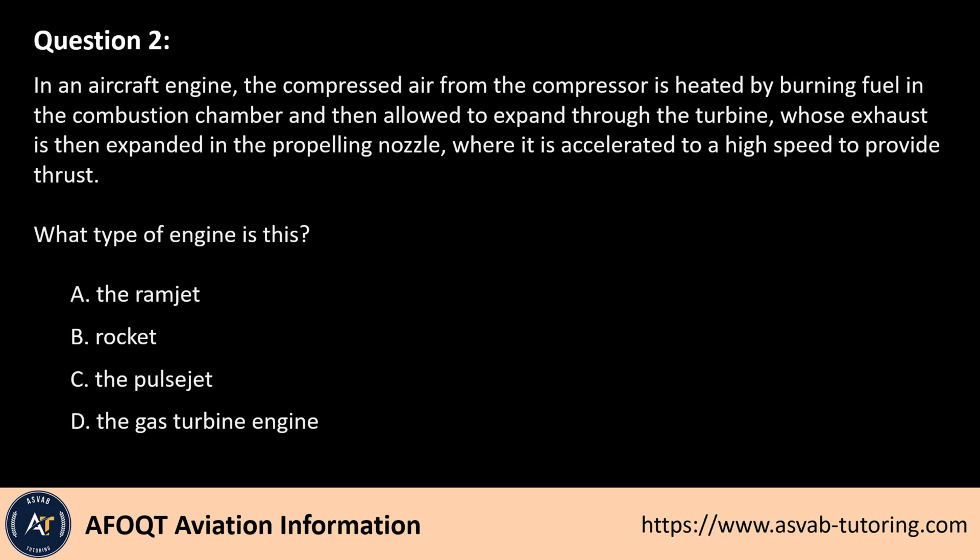Question 2. In an aircraft engine, the compressed air from the compressor is heated by burning fuel in the combustion chamber and then allowed to expand through the turbine, whose exhaust is then expanded in the propelling nozzle, where it is accelerated to a high speed to provide thrust. What type of engine is this? A. The ramjet. B. Rocket. C. The pulsejet. D. The gas turbine engine.